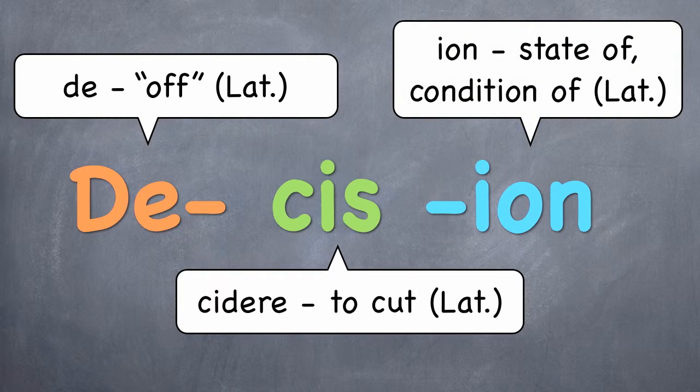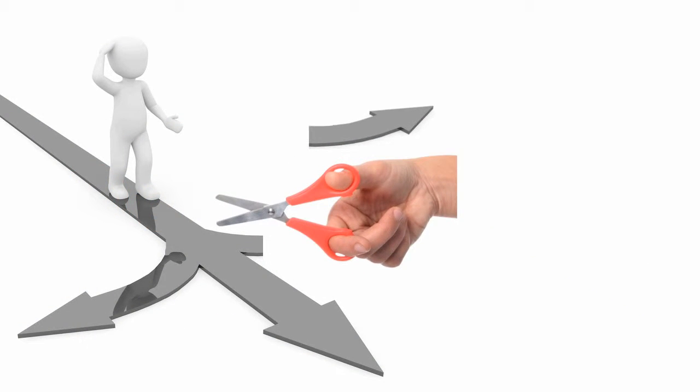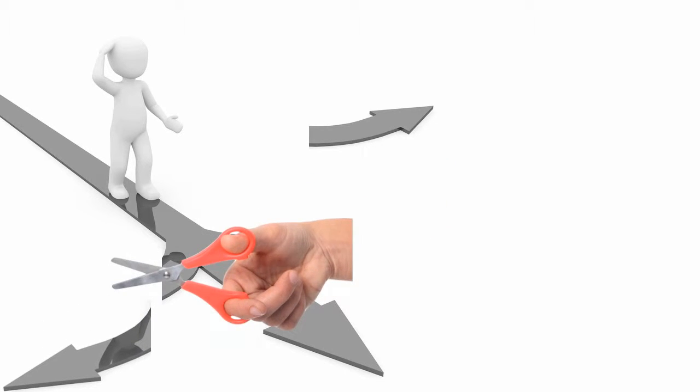And thus we have the state of cutting off. When you make a decision, you cut off any other possibilities. You cut off all other options. That's what it really means to decide.